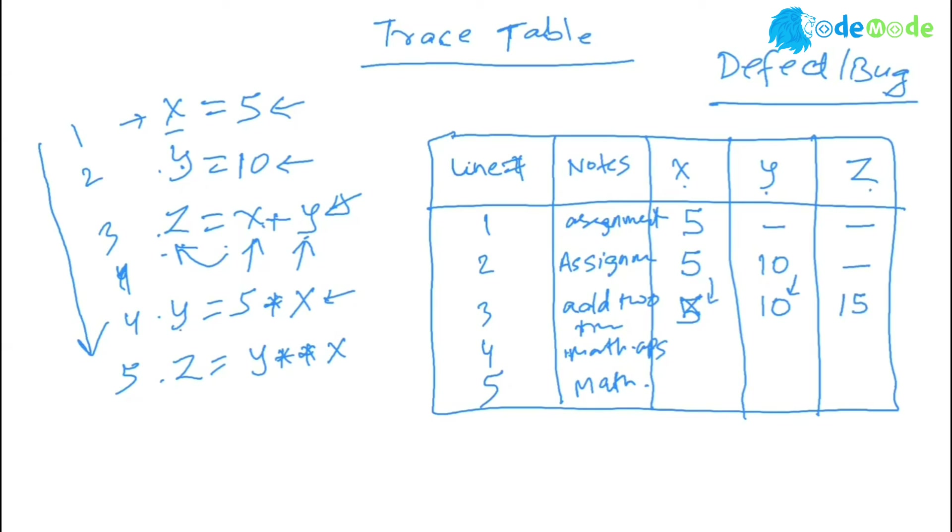In the next line, y equal to 5 times x. So x is still 5, y is 50, because 10 multiplied by 5 is 50.